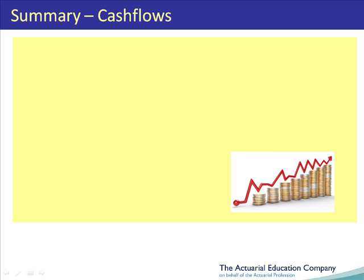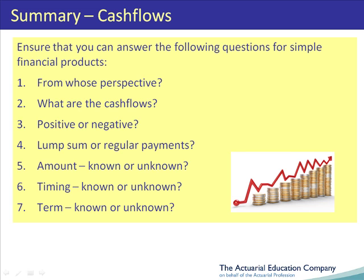In summary, for cash flows, make sure that you can answer these seven questions for any simple financial product. In particular, for a term assurance, an immediate annuity, an endowment assurance, interest-only and repayment loans, and motor insurance.